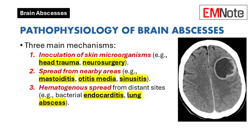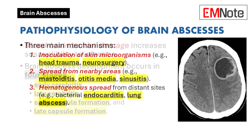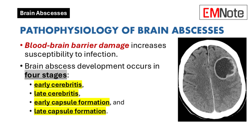The third mechanism is hematogenous spread from distant sites, which can occur with conditions like bacterial endocarditis, lung abscesses, or skin and dental infections. Damage to the blood-brain barrier, which can result from brain trauma or neurosurgical interventions, makes the brain more susceptible to bacterial infection. Animal studies have shown that as few as 10² colony-forming units of a single microorganism can initiate a brain abscess.